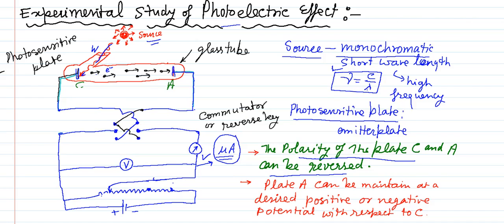We defined one electron volt in terms of joule, that is 1.6 into 10 raised power minus 19 joule. Then after we discussed the different values of work function for different materials, which depends on the nature of the material, properties of the material, and the nature of the surface.